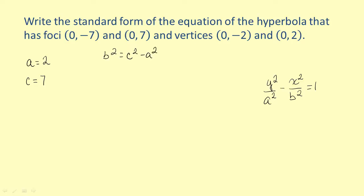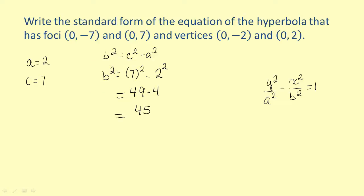So let's find b squared. We have b squared equals 7 squared minus 2 squared. We can simplify this: b squared equals 49 minus 4, which equals 45. So now we know that b squared equals 45 and we can set up our equation. The equation of this hyperbola is y squared over a squared — which we found to be 4 — minus x squared over b squared — which we now know is 45 — equals 1.